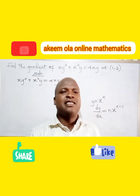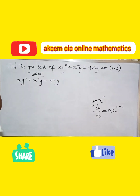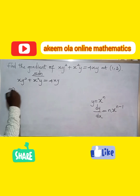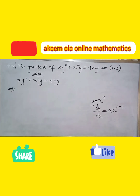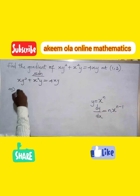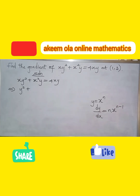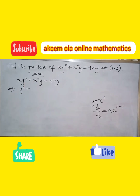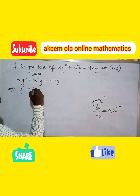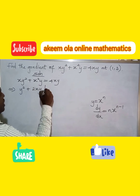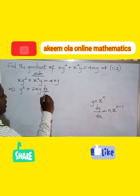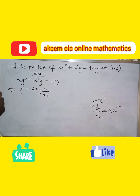Now let's solve this. For the first term, differentiating x with respect to x gives y squared, and differentiating y squared with respect to y gives 2y, so we attach dy/dx. That gives us y squared plus 2xy dy/dx for the first term.